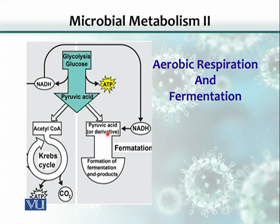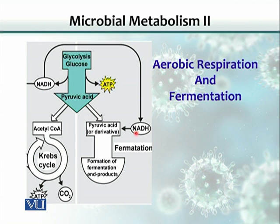But during fermentation, pyruvic acid is directly converted into some end product. During that process, the NADH which was produced during glycolysis is utilized — this hydrogen is used for the formation of end products during fermentation. NADH is then available to be used again in the glycolysis pathway.